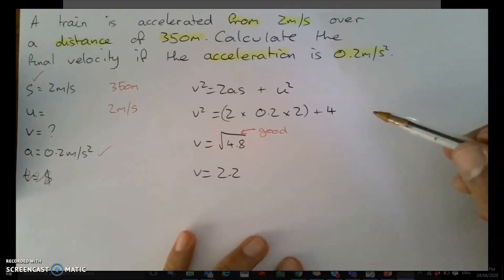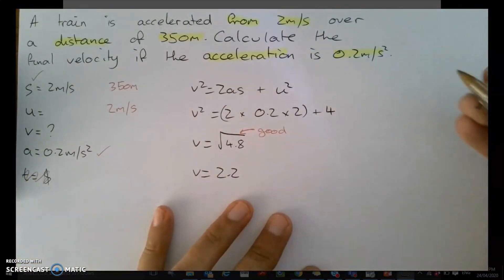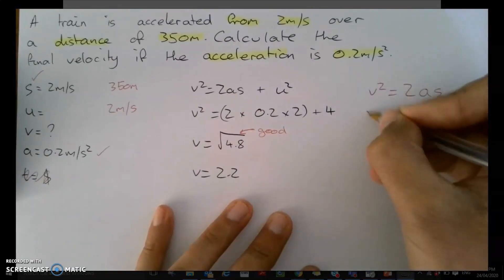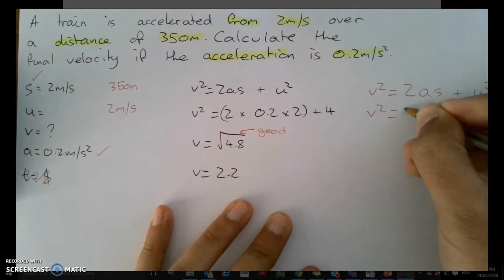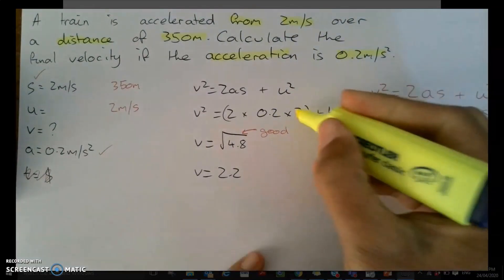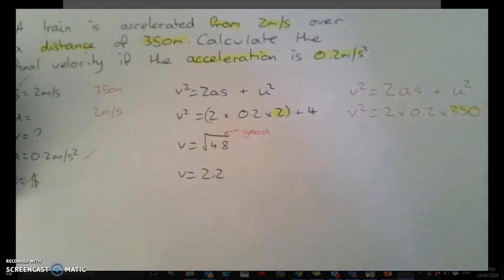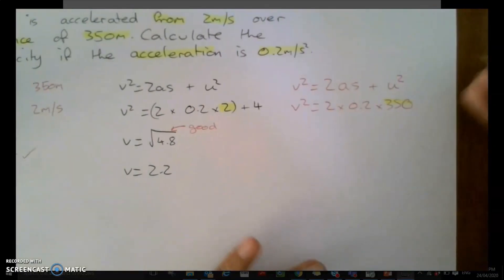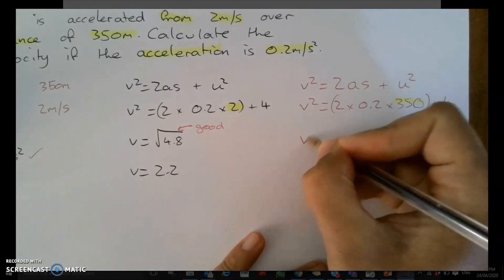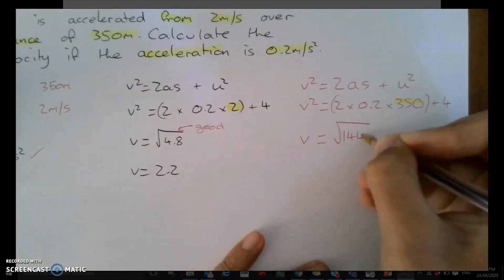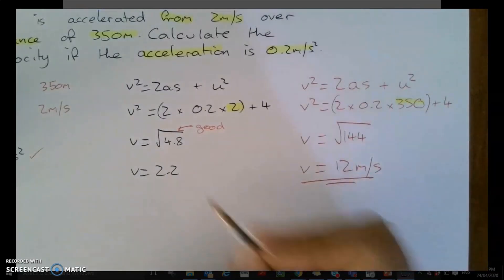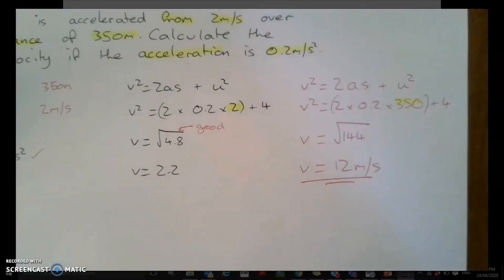Putting this into the rest of the question, she's probably noticed now what she got wrong. You can write the rest of the question for the class: V squared equals 2 times 0.2 times 350, instead of 2, which is what she had. Therefore V equals the square root of 144, and therefore V equals 12 metres per second — remembering the units, which is one of the things that she missed.